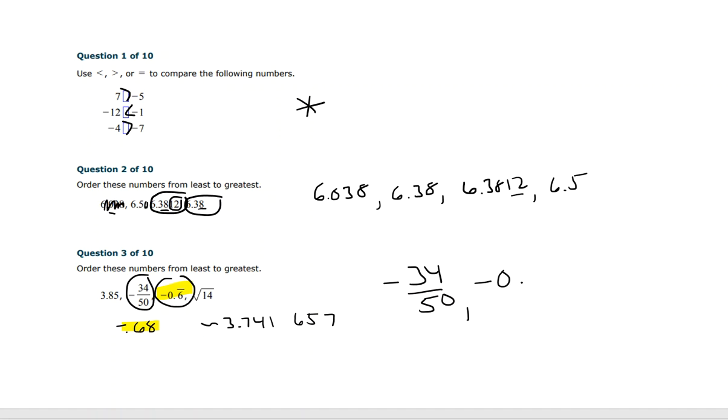Then negative 0.6 repeating. And then we would have our square root of 14, which we said was approximately 3.741. And then we have our 3.85.